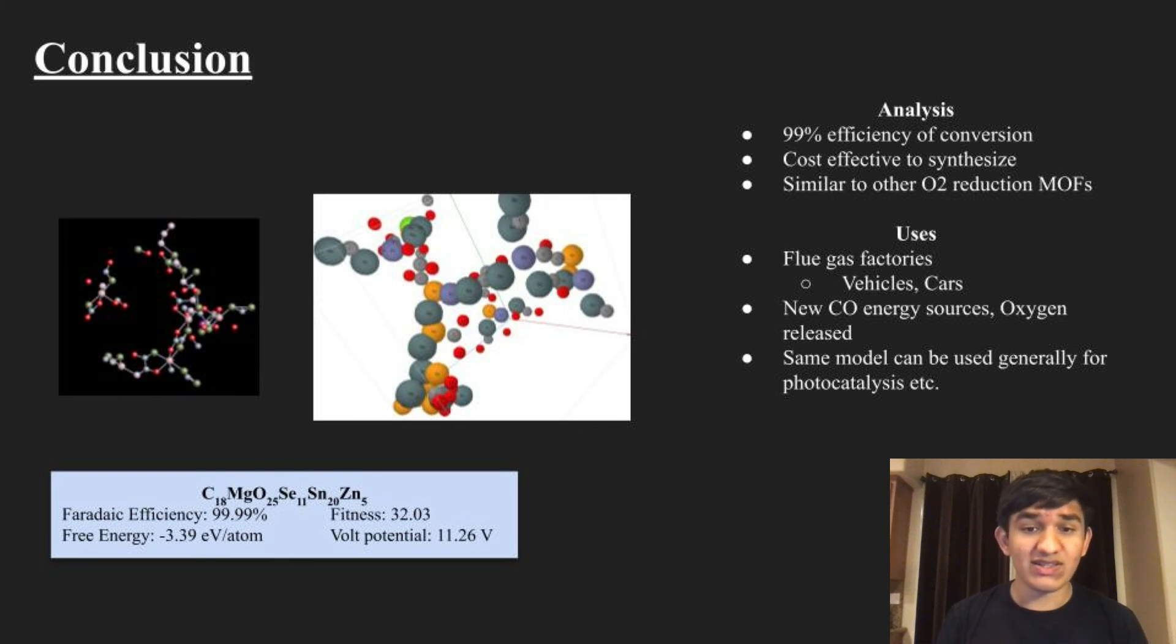In the future, I would love to synthesize this to test properties, but I do not have a lab. Assuming my predictions are accurate, this could be used as a new catalytic converter and be used for fuel, or the model could be used to predict other sparse data properties like photocatalysis. Thank you!